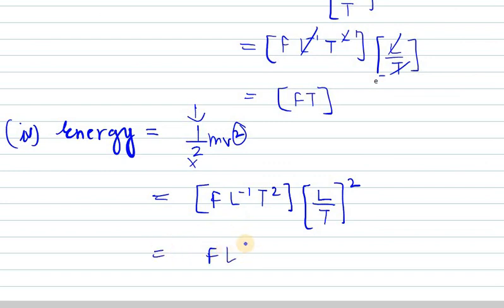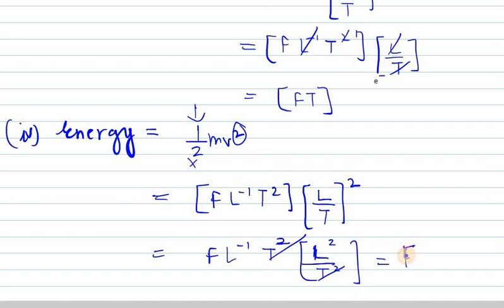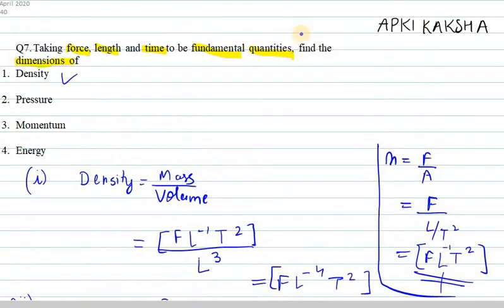Combining: FL⁻¹T² times L²T⁻² — the T squared terms cancel, and the L terms give minus 1 plus 2 equals 1. So the dimension of energy is FL. That's all for question number seven, thank you for watching.